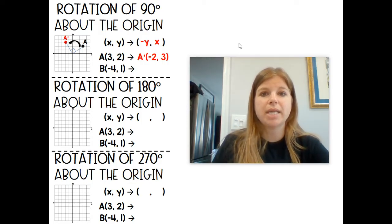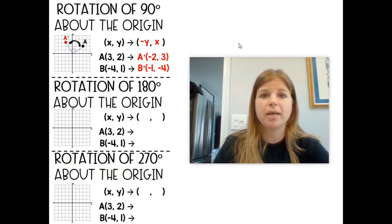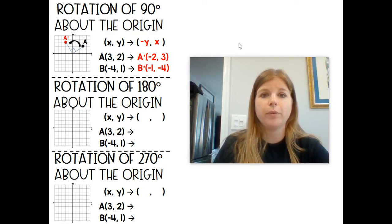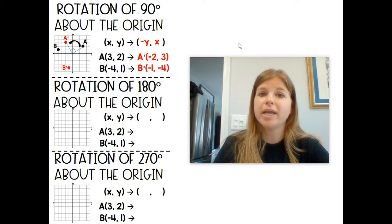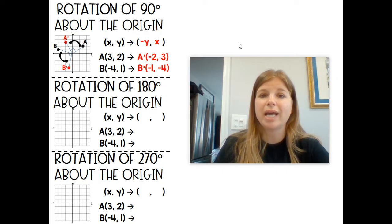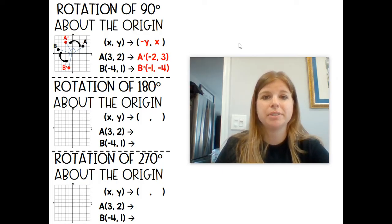Let's try point B. B is at (-4, 1). If I follow this format of (-y, x), I get (-1, -4). Here's my point B at (-4, 1), and B prime is at (-1, -4). If I show you that it's at a 90-degree angle, rotated towards the left — counterclockwise — that's all I have to do to get my rotations.